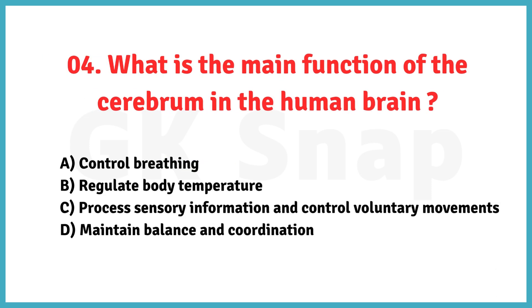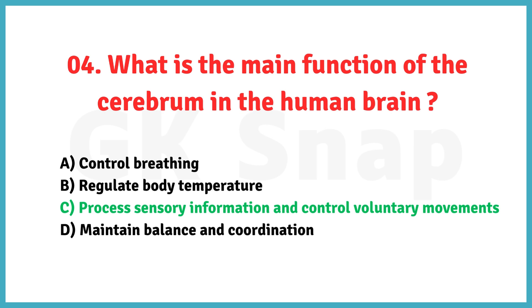What is the main function of the cerebrum in the human brain? Correct answer is option C: process sensory information and control voluntary movements.